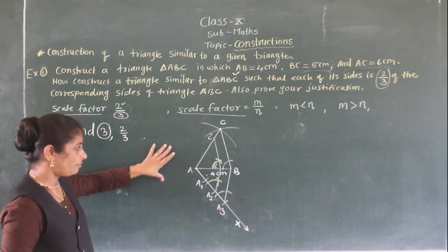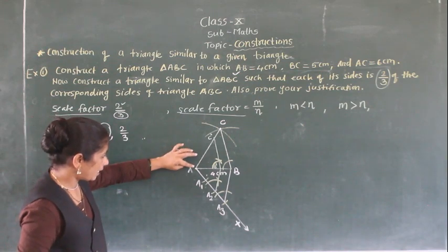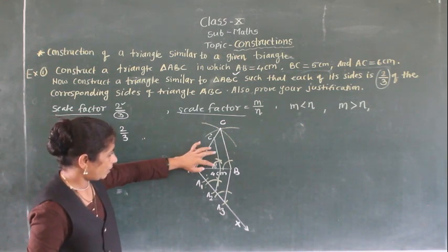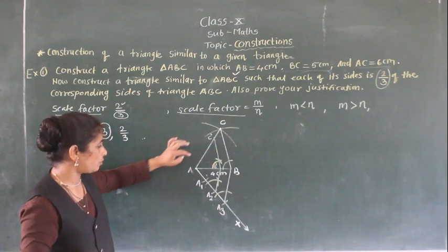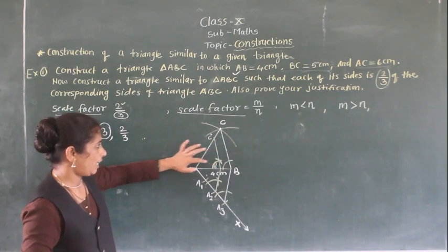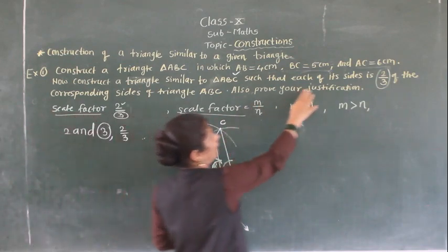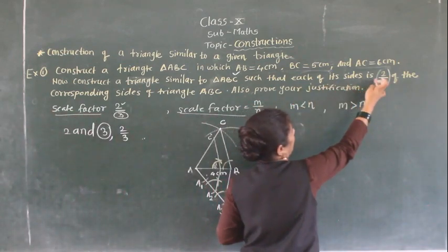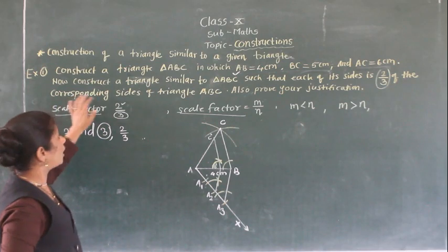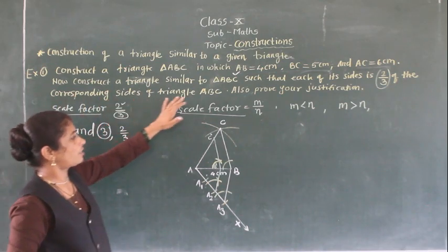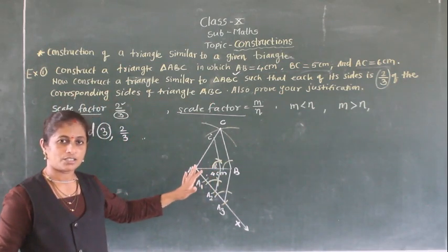In this construction we got triangle AB dash C dash, which is similar to triangle ABC such that each of its sides is 2/3 of the corresponding sides of triangle ABC.